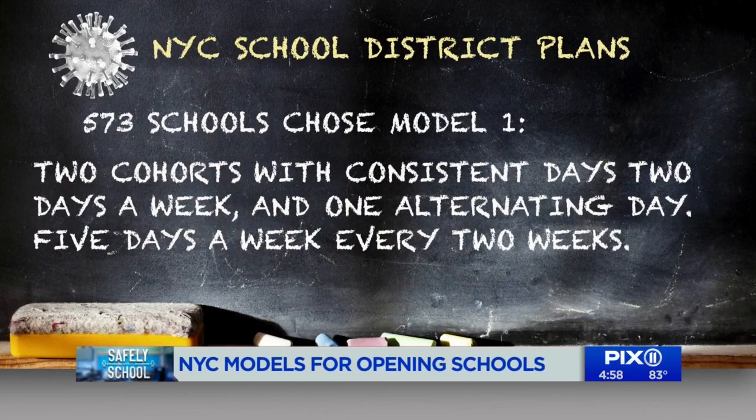573 city schools chose Model 1, where the school population will be divided into two groups called cohorts. Each group will attend two days a week with one alternating day, and each group will have a five-day week every two weeks.